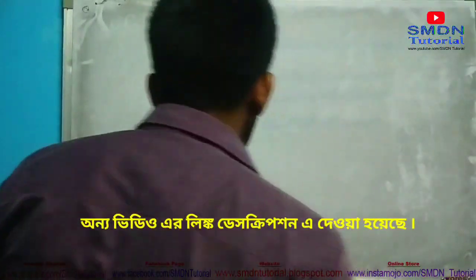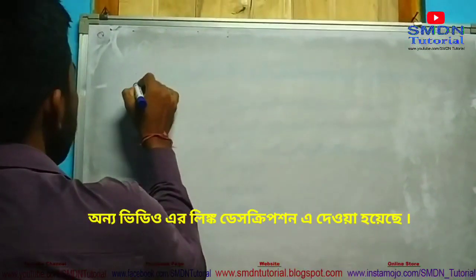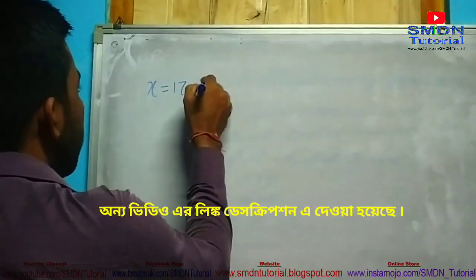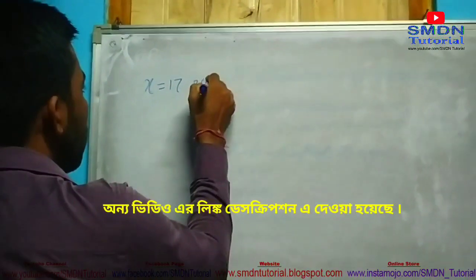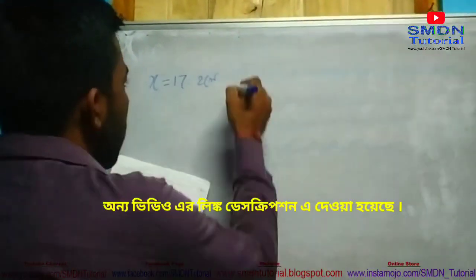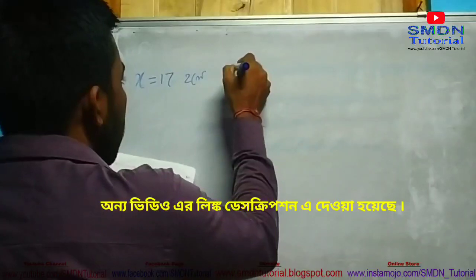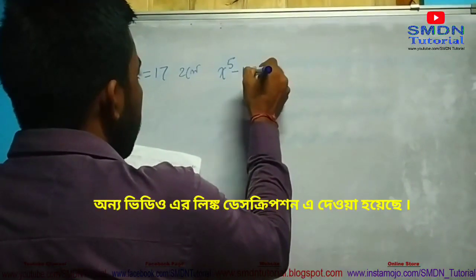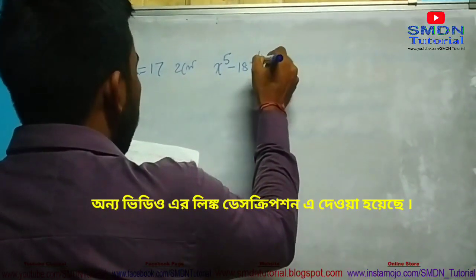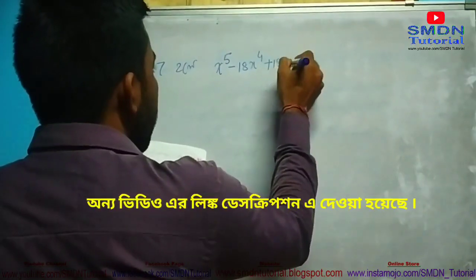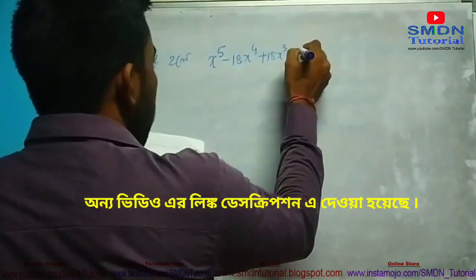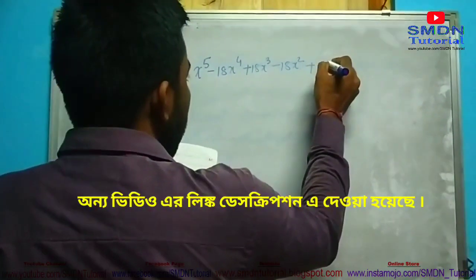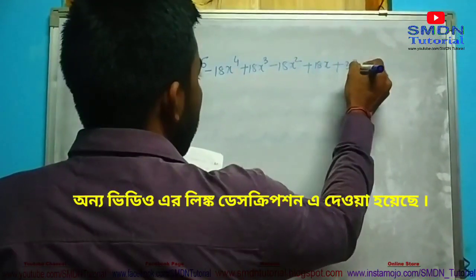Second question: x is equal to 17. We have x to the power 5 minus 18x to the power 4 plus 18x cubed minus 18x squared plus 18x plus 33.